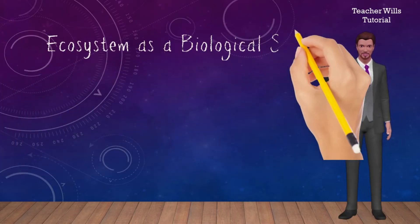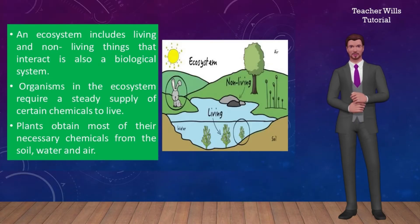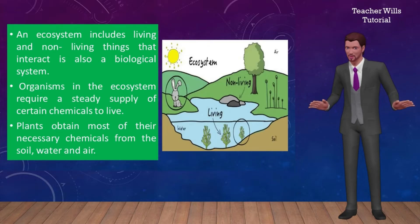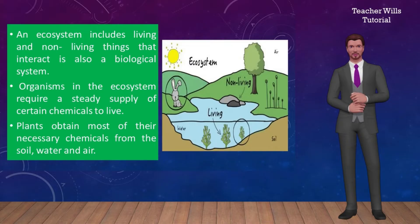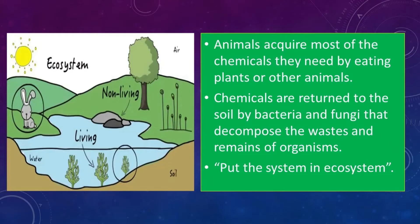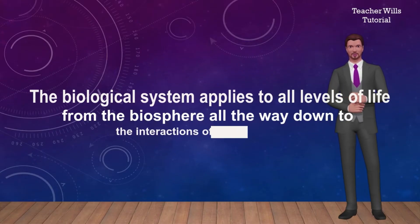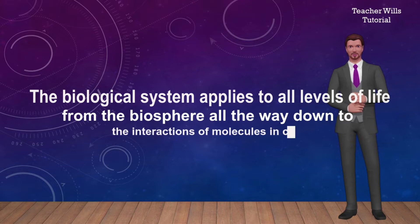Like in humans, the ecosystem can also be a biological system. An ecosystem includes living and non-living things that interact, and is also a biological system. For example, organisms in the ecosystem require a steady supply of certain chemicals to live. Plants obtain most of their necessary chemicals from the soil, water, and air. Animals acquire most of the chemicals they need by eating plants or other animals. Chemicals are returned to the soil by bacteria and fungi that decompose the wastes and remains of organisms. Such interactions of organisms with each other and with the non-living environment put the system in ecosystem. The biological system applies to all levels of life, from the biosphere all the way down to the interactions of molecules and cells.